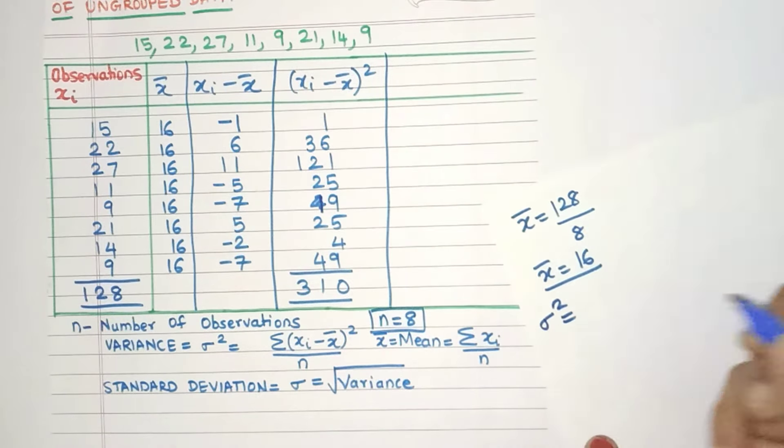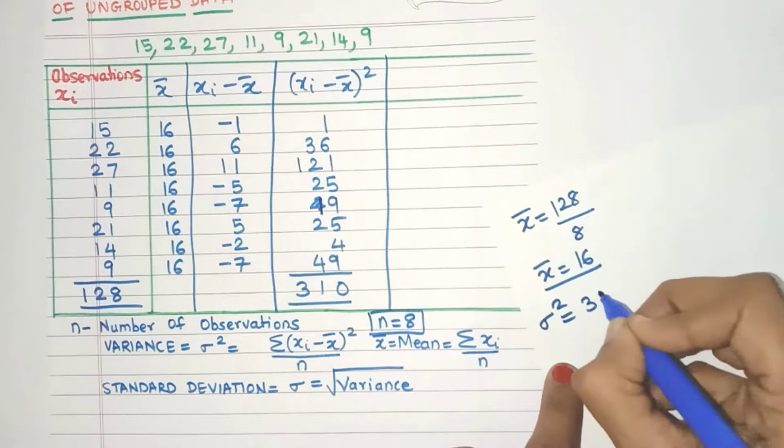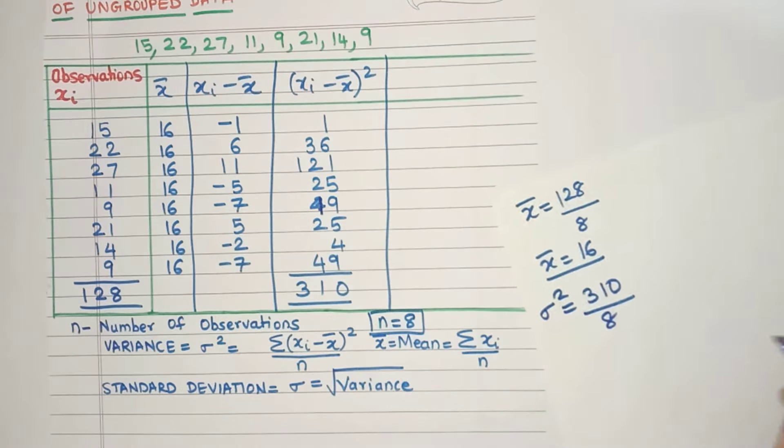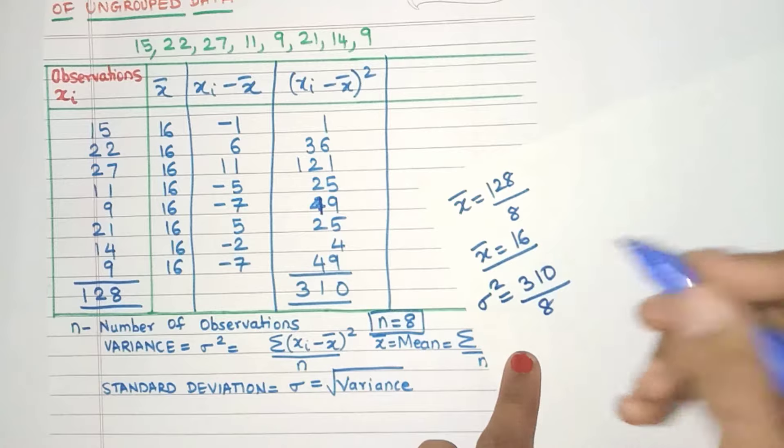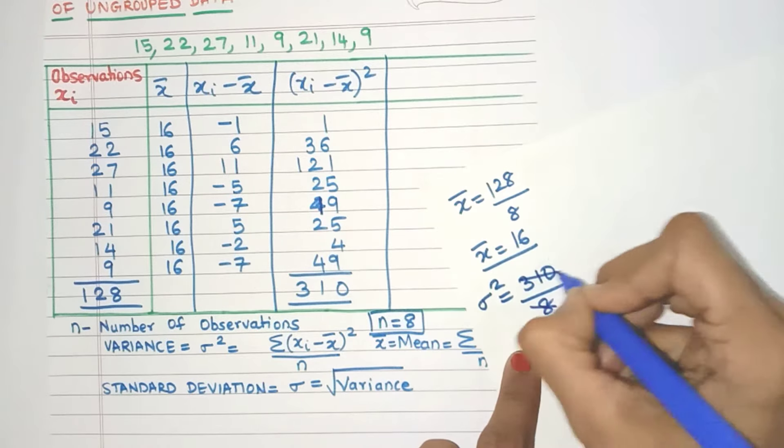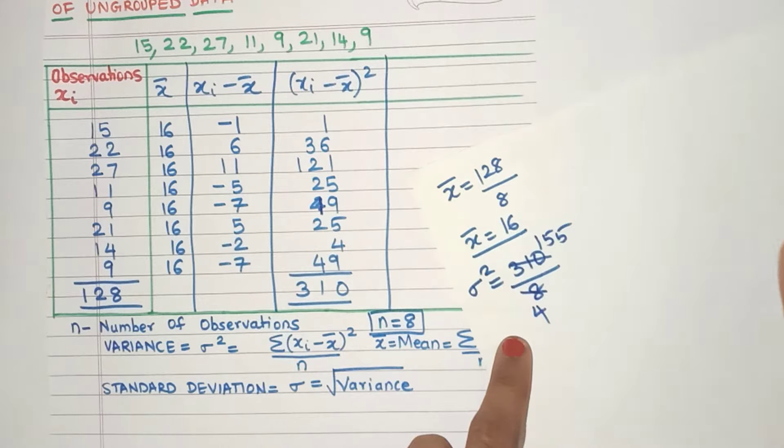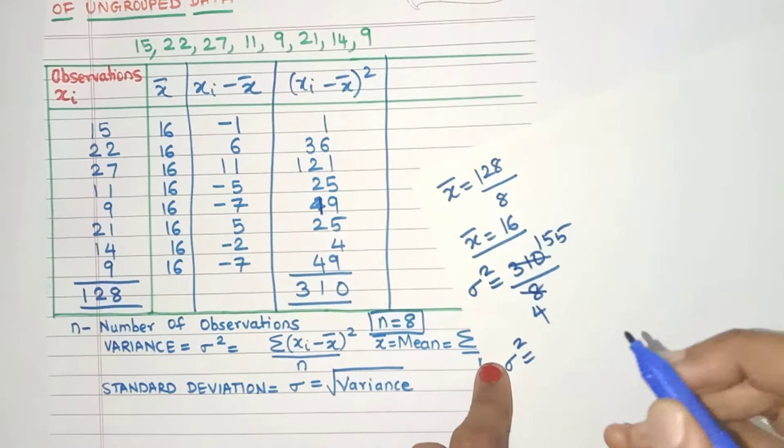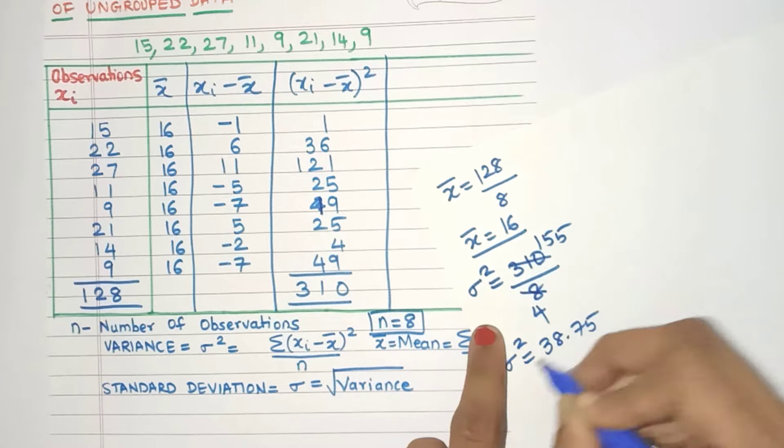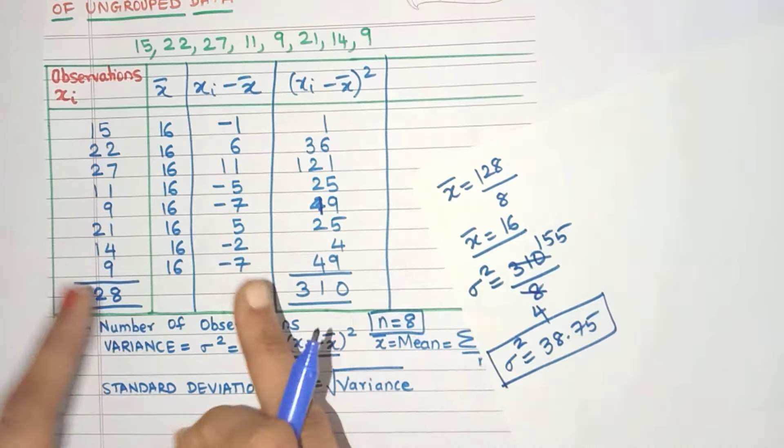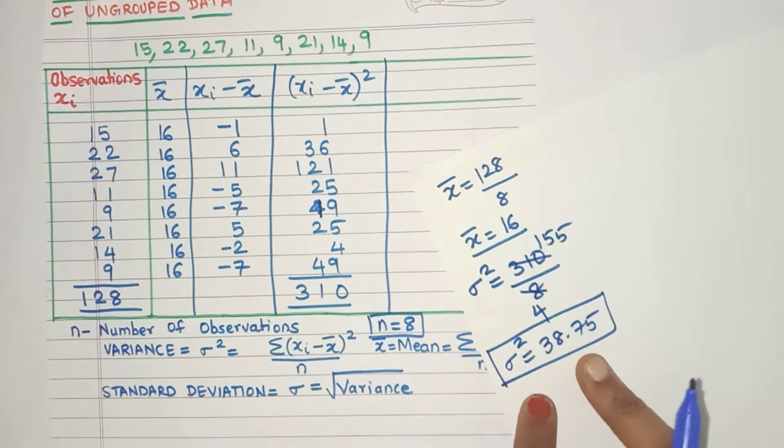So the variance or the σ² is, yes, 310 divided by n which is 8. Now I think it will go into stable. Let's see. Yes, 2 4s are 8 and 155. That's it, right? Now we have to do the division. Now on doing the division, you will get it as 38.75. So the variance of this data is 38.75.